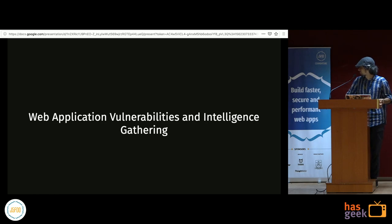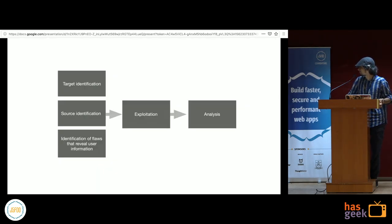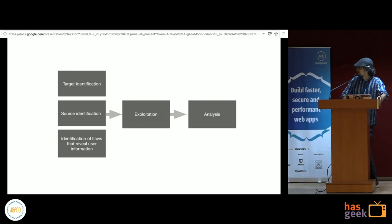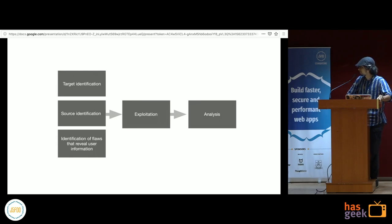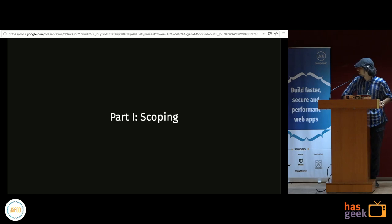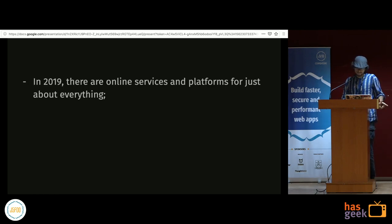Here is the methodology I'm proposing for web application vulnerabilities and intelligence gathering. It deviates from the regular OSINT methodology: target identification — who or what demographic you're looking to find information about — then source identification — what websites they frequent — then identification of flaws in those sources, then exploitation, and finally analysis.